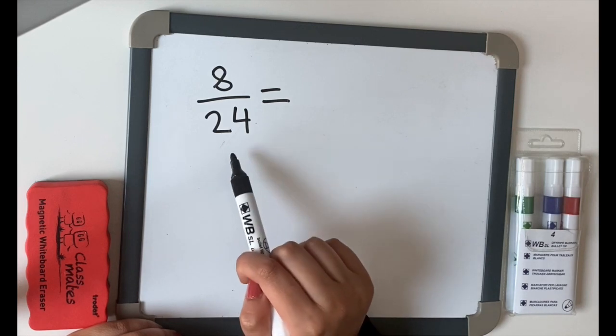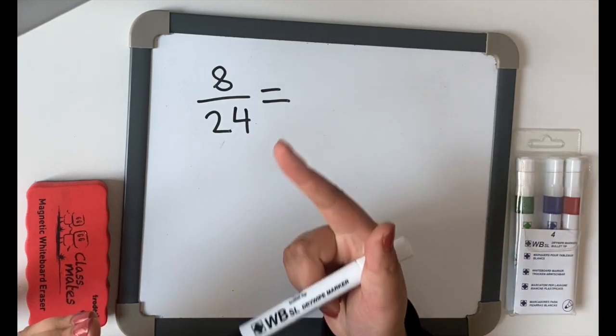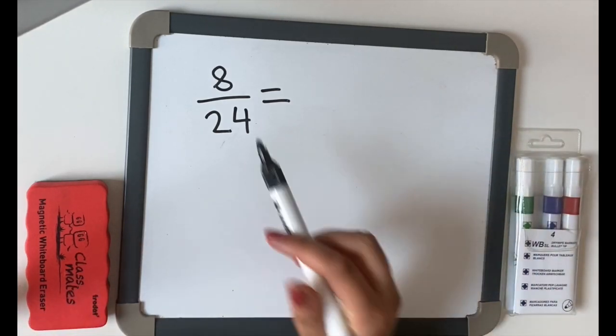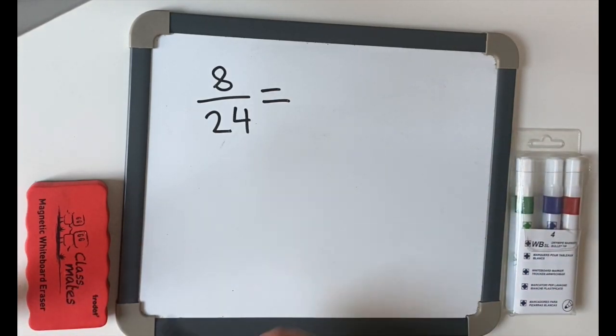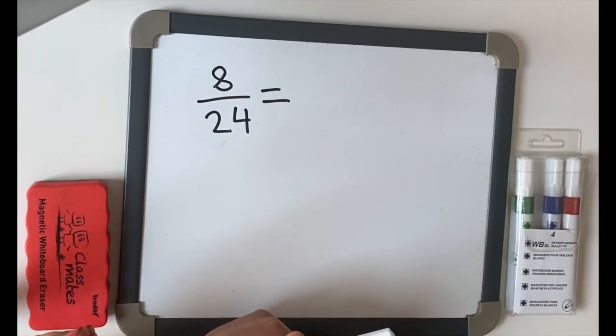Now we know 2 will go into it. 3 will go into 24. Let's do it together: 3, 6, 9, 12, 15, 18, 21, 24. But it won't go into 8. Will 4 go into 8? 4, 8, yes. Will 4 go into 24? 4, 8, 12, 16, 20, 24. I'm thinking of something else. I'm pretty sure that 8 times tables goes into 8 and 24. Let's have a go. Let's do it together.